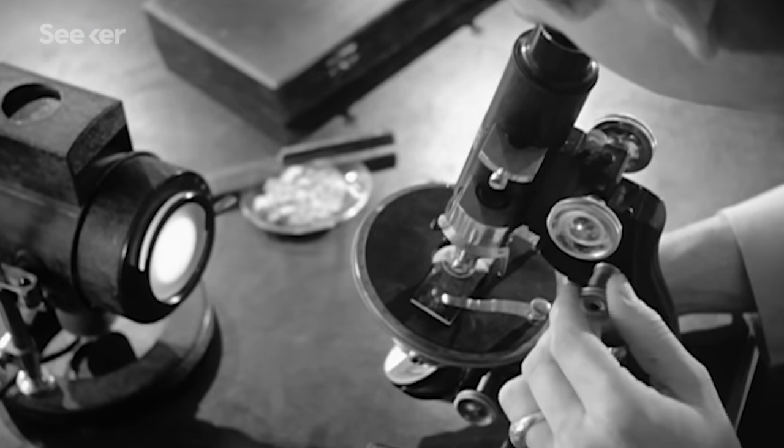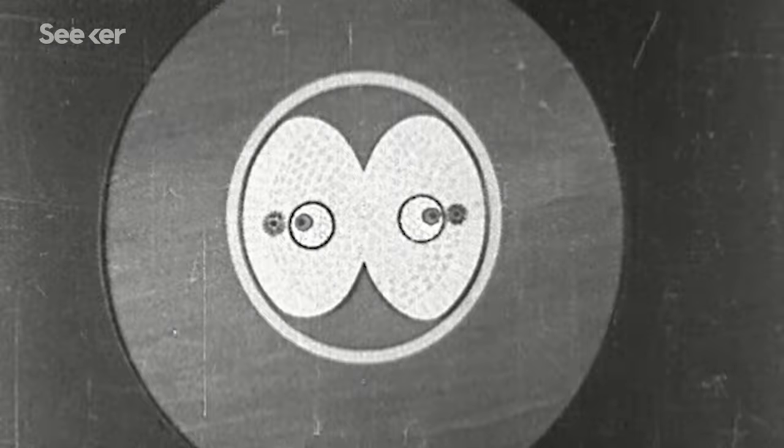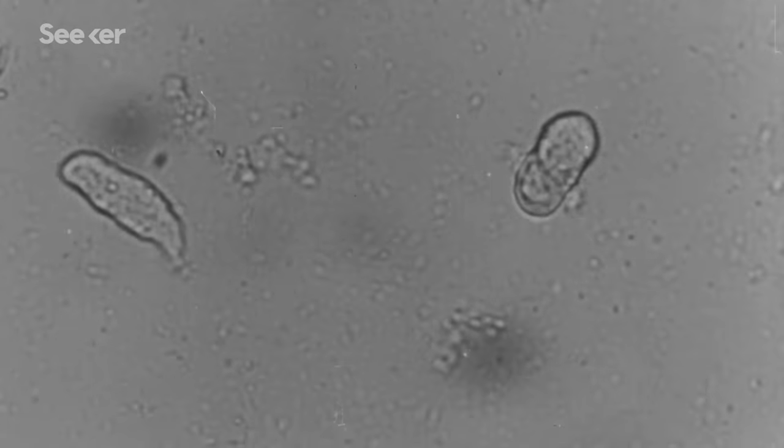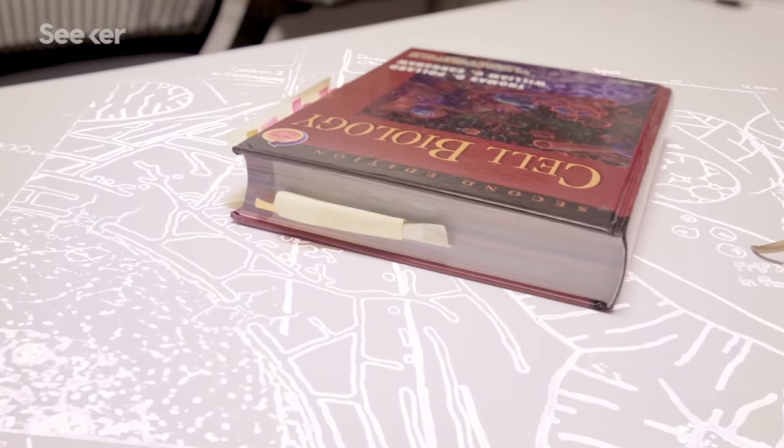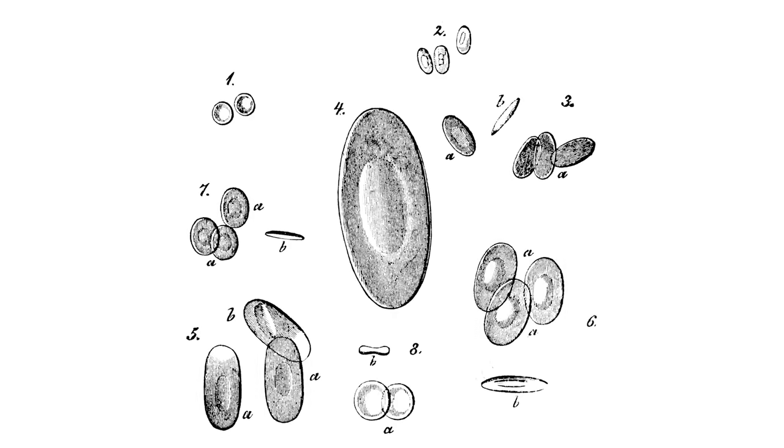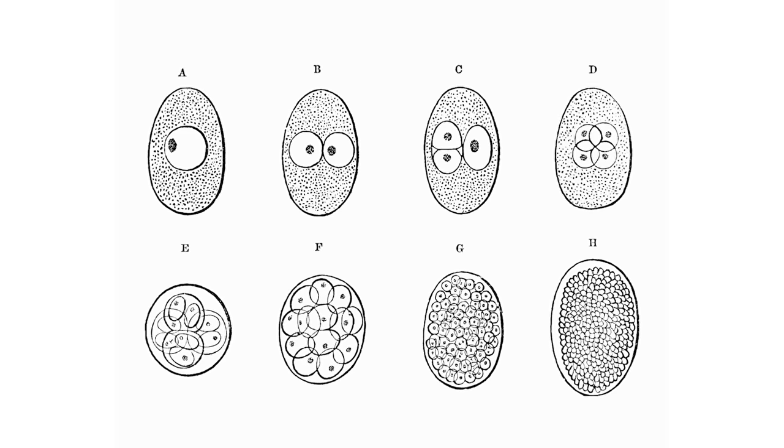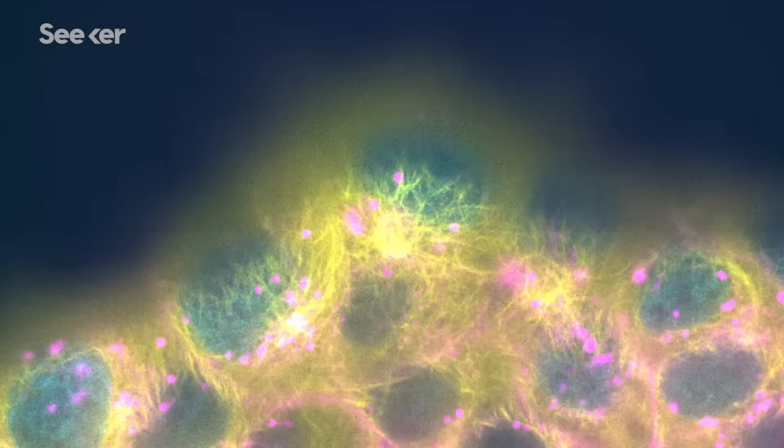For centuries, microscopes have illuminated previously invisible worlds. We've learned how cells divide and even discovered the existence of bacteria and microorganisms. These historical breakthroughs are often found in your typical high school textbook. I fell in love with the cell when I saw textbook images, and I learned as I started studying that those are vast simplifications of what those structures actually do and what's inside the cell. They don't allow us to embrace the messiness and complexity in the cell.